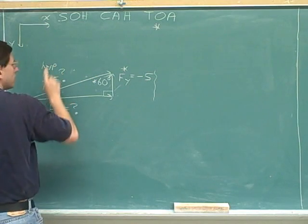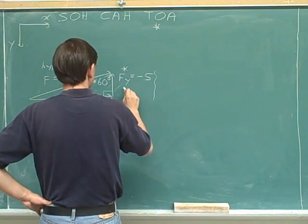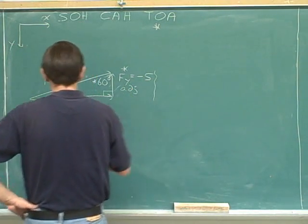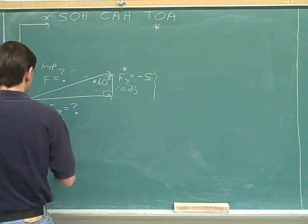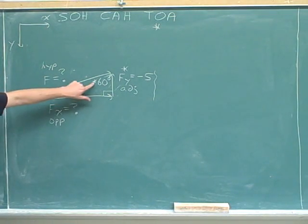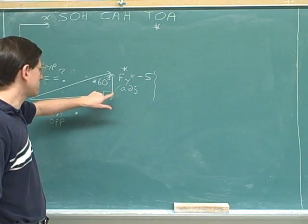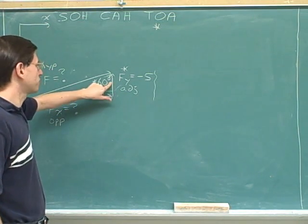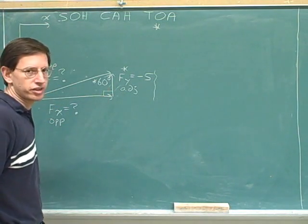Let's label the hypotenuse and the adjacent side and the opposite side. This horizontal side is opposite to the 60-degree angle, and this vertical side is adjacent to the 60-degree angle.